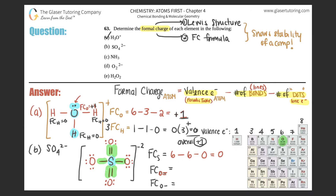Now for the double-bonded oxygen: valence electrons = 6. This oxygen has two lines (two bonds), so minus 2. Lone electrons: 1, 2, 3, 4 dots, so minus 4. That's 6 − 2 − 4 = 0 — formal charge is zero for both double-bonded oxygens. For the single-bonded oxygen: valence electrons = 6. Only one bond attached, so minus 1. Lone electrons: 1, 2, 3, 4, 5, 6 dots, so minus 6. That gives 6 − 1 − 6 = −1. That's where the negative charges come from.